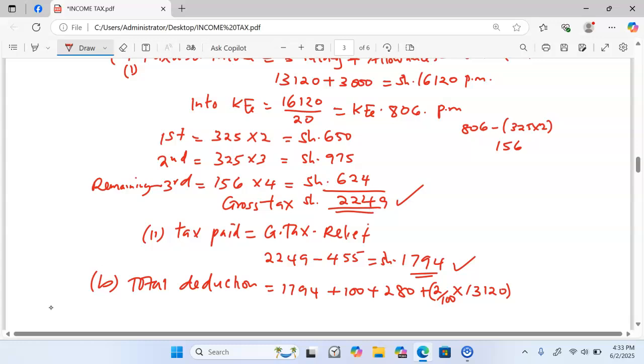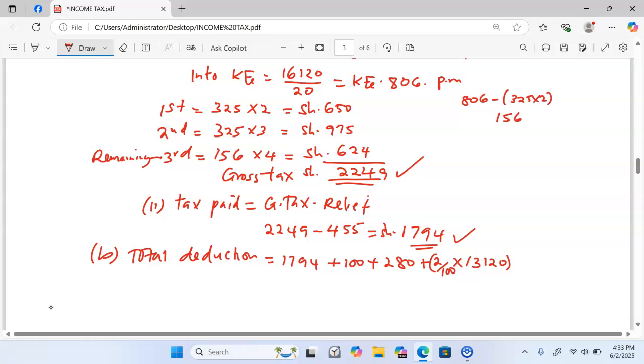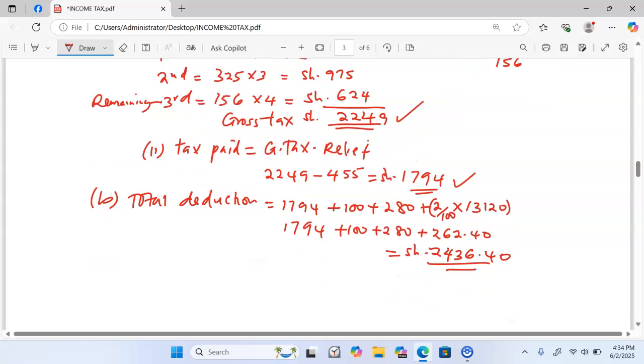And the basic salary is 13,120. So 13,120 will give us 262 and 40 cents. That means we are going to have 1,794 plus 100 plus 280 plus 262, 40 cents. And this one gives us a total of 2,436, 40 cents as the total deductions. That is B Roman 1.